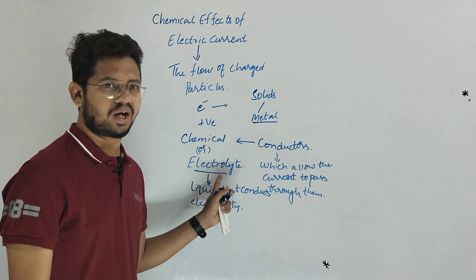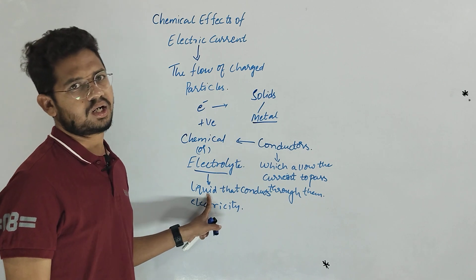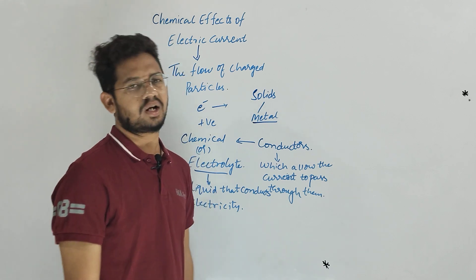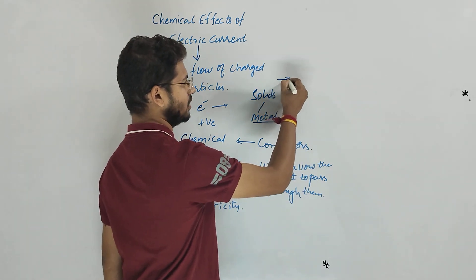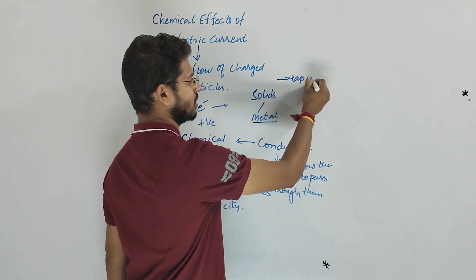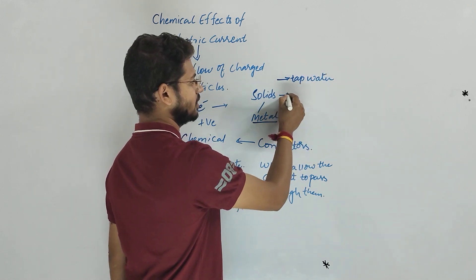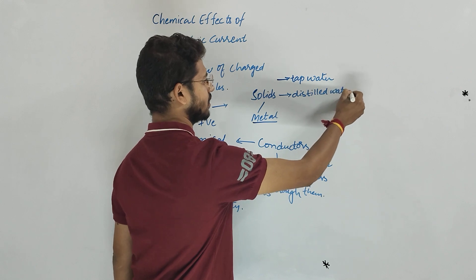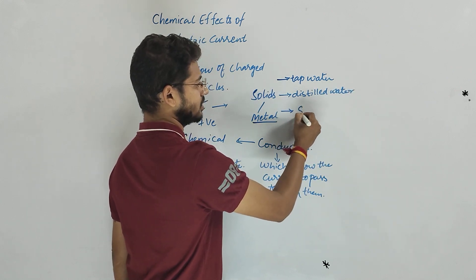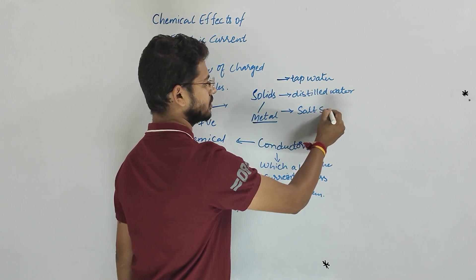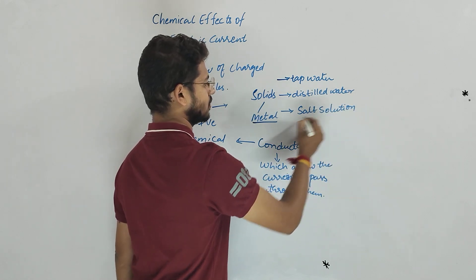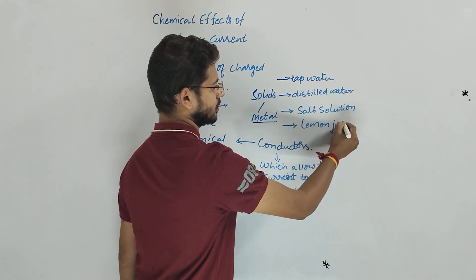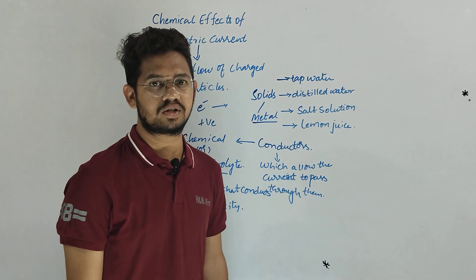Electrolytes are nothing but liquids. There are different types of liquids present in our everyday life. Let us take: tap water, distilled water, salt solution, lemon juice, and other liquid substances that are present around us.